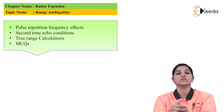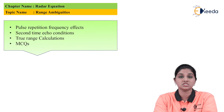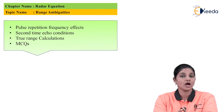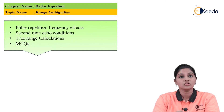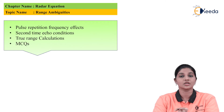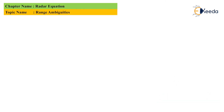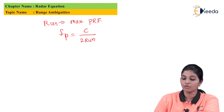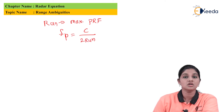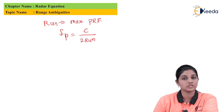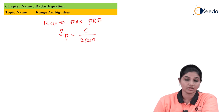The Pulse Repetition Frequency is determined from the maximum unambiguous range beyond which the radar can expect the target. The Pulse Repetition Frequency obtained from maximum unambiguous range is denoted by Run, and it is given as: Fp = C / (2 * Run), where C is the speed of propagation, equal to the speed of light.